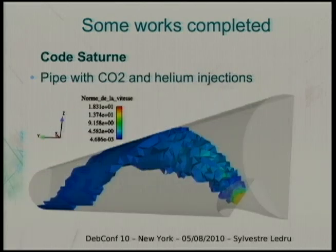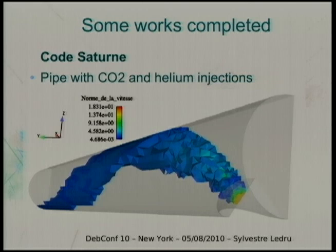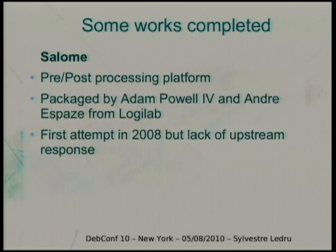Here is one of the results — it's CFD, Computational Fluid Dynamics. In this example, inside a pipe we inject some CO2 and helium and do strong computation. This software can run on clusters with MPI, and also on a laptop. It renders using ParaView, which is another software available in Debian Science. We can do some pretty amazing stuff with this software. I've got some video if people are interested.